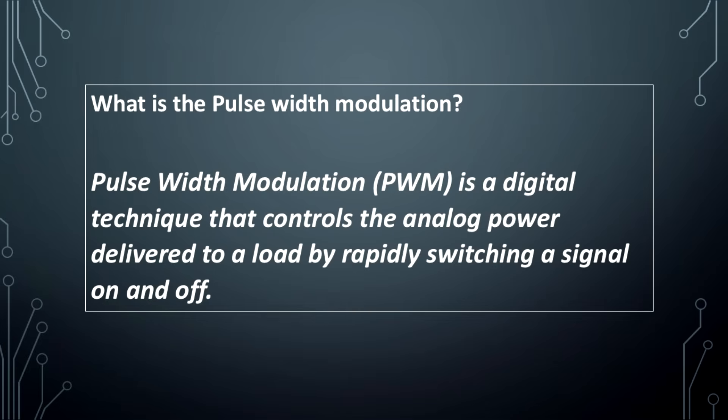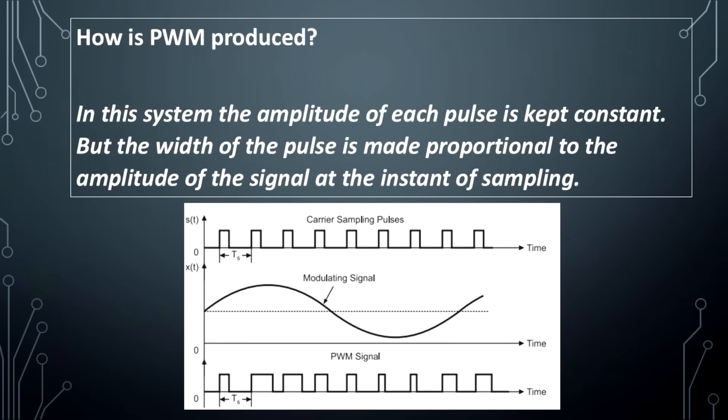What is pulse width modulation? Pulse width modulation is a digital technique that controls the analog power delivered to a load by rapidly switching a signal on and off.